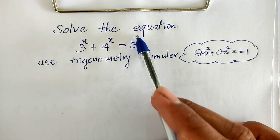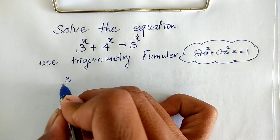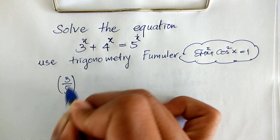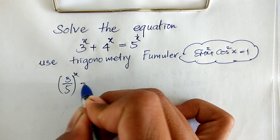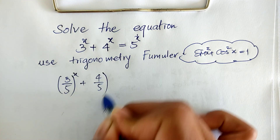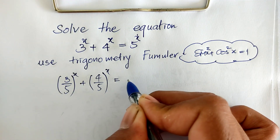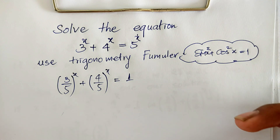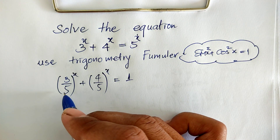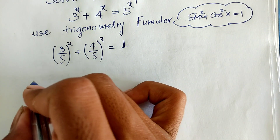So I divide both sides of this equation by 5 power h. So we get: 3 divided by 5, all to the power h, plus 4 divided by 5, all to the power h, is equal to 1.